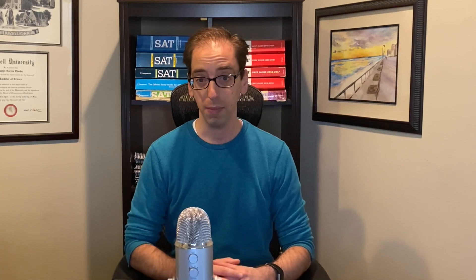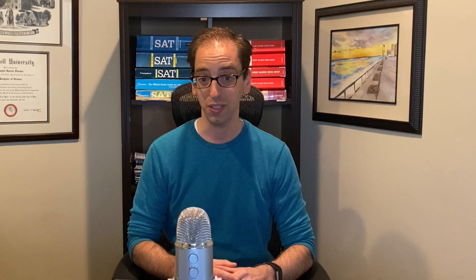In trig, you might have learned the mnemonic ASTC. In quadrant 1, A — all values (sine, cosine, and tangent) are positive. In quadrant 2, S — sine is positive. In quadrant 3, T — tangent is positive. In quadrant 4, C — cosine is positive. I've heard different versions: 'all-star trig class' or 'all students take calculus' — whatever works. Now, theta is going all the way into quadrant 4. Following ASTC, only the cosine value is positive there. They're asking for the sine value, which means we need a negative answer. That's enough to knock out B and C. The answer is A.